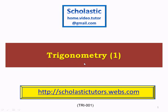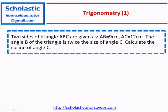Hello, welcome back. In this video we are going to look at an example of trigonometry. Two sides of triangle ABC are given as AB equal to 9 centimeters, AC equal to 12 centimeters. The angle B of the triangle is twice the size of angle C. Calculate the cosine of angle C.